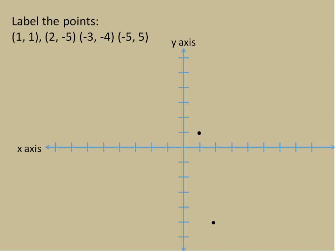For (-3, -4), we go three to the left on the x-axis and then four down, so negative three, negative four would be right around there. And our final point, (-5, 5) — we go five to the left and then up one, two, three, four, five. We put a point right about there. Remember: the first number is always our x-value and the second number is always our y-value, and we always start at the origin and move according to those numbers.